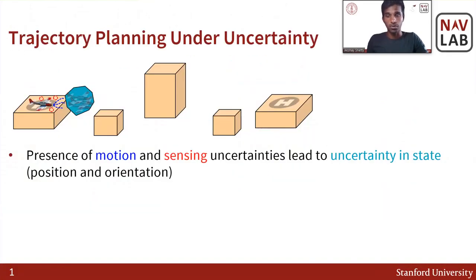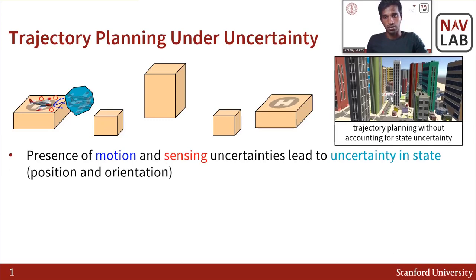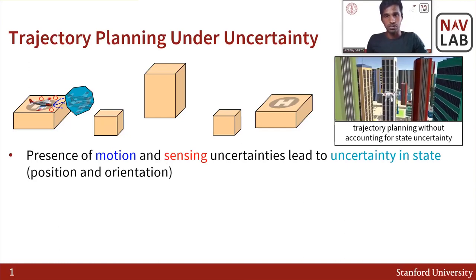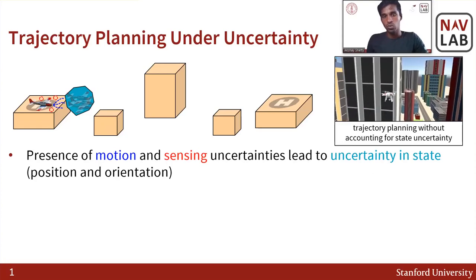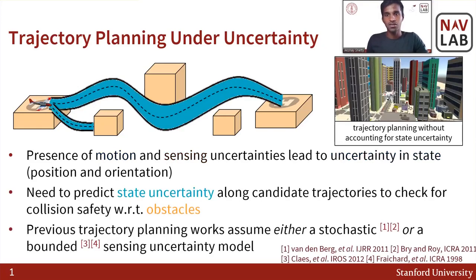First, let's take a look at why it is important to consider uncertainty for trajectory planning. The presence of uncertainties such as motion uncertainties and sensing uncertainties leads to uncertainty in the state of the system, which typically consists of the position and orientation. Here is a quick video of what might happen if we don't consider state uncertainty during trajectory planning. We plan a straight trajectory between buildings in an urban canyon. However, as the UAS gets closer to the buildings, errors in GNSS measurements result in the UAS deviating from the planned trajectory, which ultimately leads to a collision. Thankfully, this was only a simulated flight.